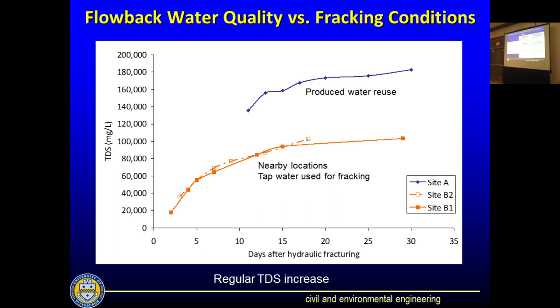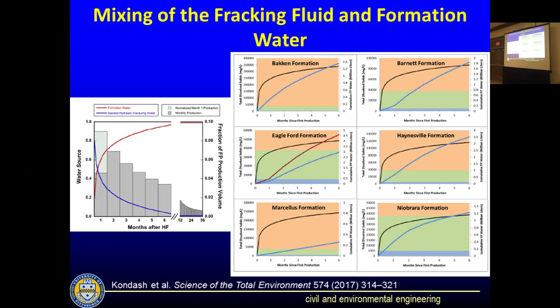There is data showing that produced water initially has the signature of the frack fluid, then later has the signature of formation water — a reduction in frack fluid composition and an increase in formation water. A paper from Kondash in Science of the Total Environment shows different formations and their best estimates of produced water salinity and volume. You can see the Marcellus is pretty dry, with very little volume produced. As one producer told me early on: if the Marcellus were anything like the Permian, with all that water, we wouldn't be developing it as fast because we wouldn't know what to do with the water.